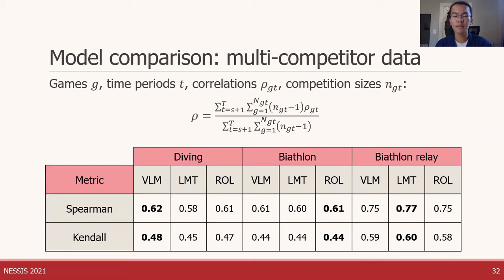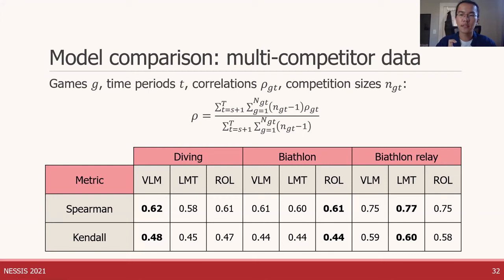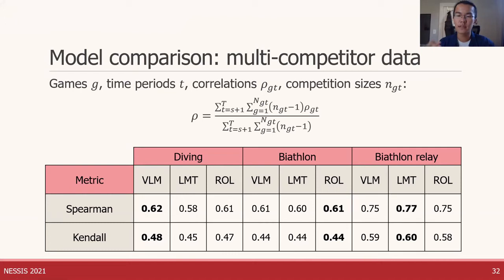For the multi-competitor datasets, we compute Spearman and Kendall correlations for each game, comparing observed ranks to predicted ranks under the model, where predictions use data only up to the previous time period. We summarize the game correlations using a game-size-weighted average. In the table, VLM is the vanilla DLM, LMT is our DLM with transformations, and ROL is the rank-order logit model — higher numbers are better. While our model can predict relative scores, the rank-order logit model can only predict rankings, so our metrics have to be rank-based for comparison.